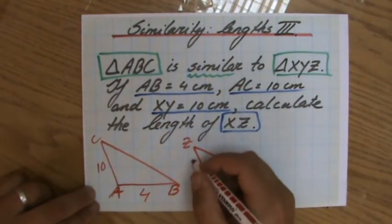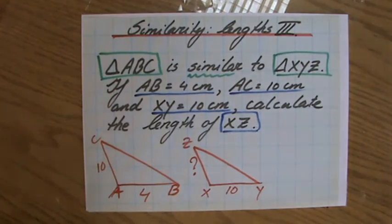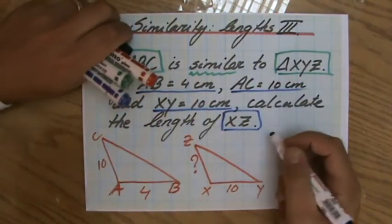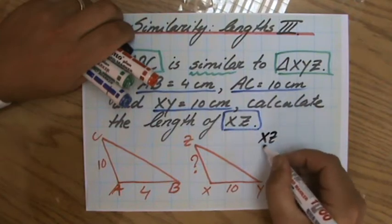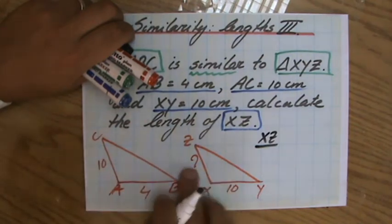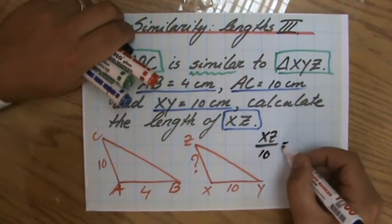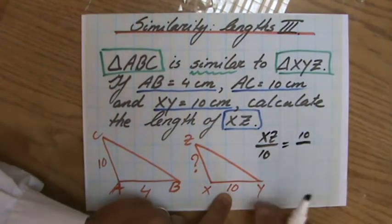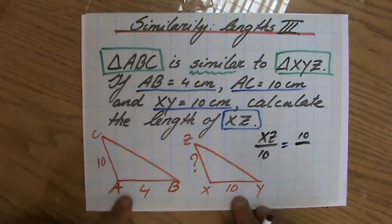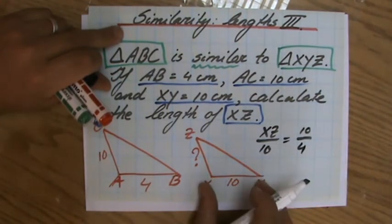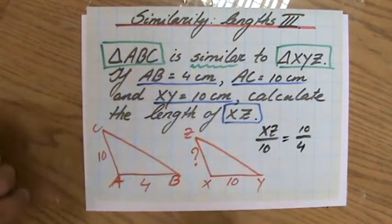Calculate the length of XZ. Let's put a little question mark there. So my approach, as I showed you in my previous videos, is I do my unknown. My unknown, so XZ, over the corresponding side of the other triangle in this case, and it corresponds with AC, so over 10, equals, and then, because I started in a bigger one, I started in a big triangle again, 10 over, which I'm looking for two lengths, corresponding lengths that I both know the length of. So 10 over 4. XY corresponds with AB.